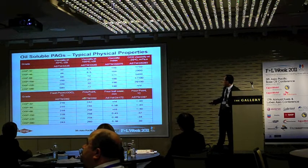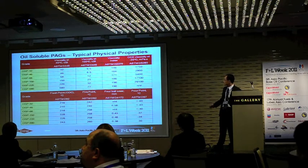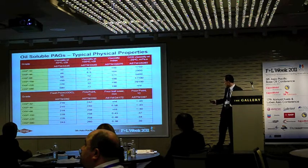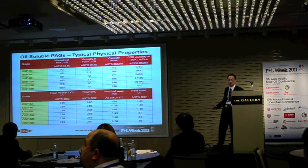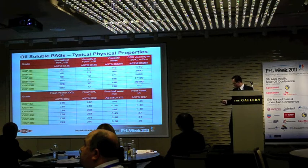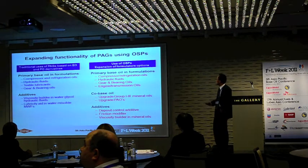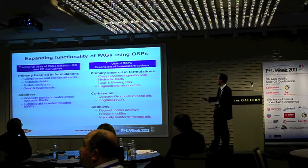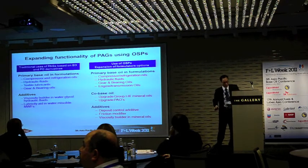If you look at the flash point and the fire point, I would say probably it's reasonable. But the pour point — you see all the pour points are low, because you have more oily properties coming from these PAGs. The pour points are all below around 30 degrees. So compared to the typical PAGs, to the oil-based PAGs, what kind of benefit can you have with this new kind of PAG?